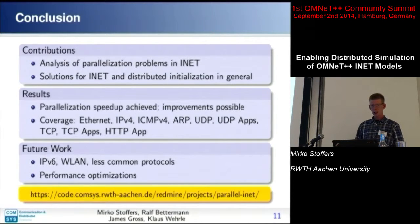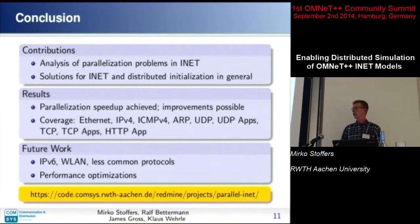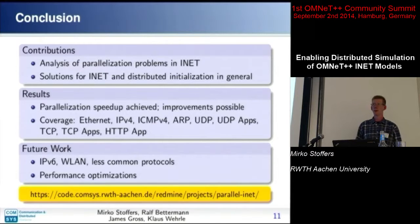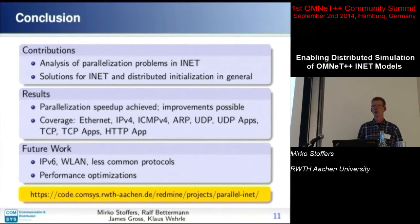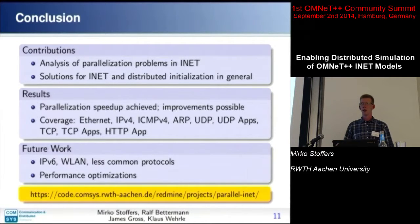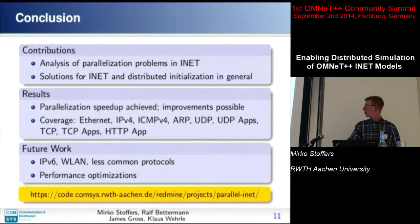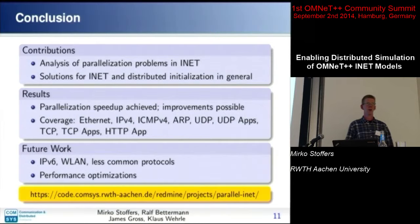Our implementation covered a lot of protocols from the common protocol stack. What we did not look into includes IPv6 — though it shouldn't be very different from IPv4 — and wireless LAN, which is always problematic for parallel execution because it typically has very short or even zero link delays, making partitioning a wireless LAN into different LPs probably not a good idea anyway. We also didn't look into all routing protocols like AODV, but we wouldn't expect fundamentally different problems there; we consider this future work.